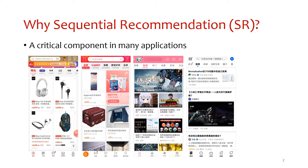Sequential recommendation learns sequential interests within user historical interaction behaviors. It is considered to be a promising way of providing better user experience in mobile commerce, because user interactions on mobile devices are usually fragmented and momentary, and sequential recommendation can effectively work on a small scale of data.